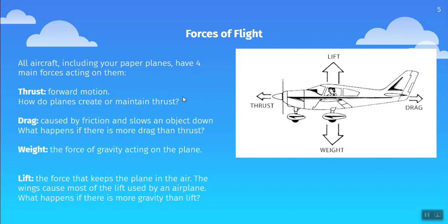As we go through this, think to yourself: what are some ways in which planes create or maintain thrust? Looking at this picture, can you think of one? And as we look at drag, what happens if there is more drag than thrust acting on our plane? Similarly, as we think of lift, what happens if there's more gravity than lift? Our scientists and engineers who develop planes and aircraft are constantly working on ways to be more efficient in construction — to maximize the forces we do want, thrust and lift, and minimize the forces we don't, weight and drag.